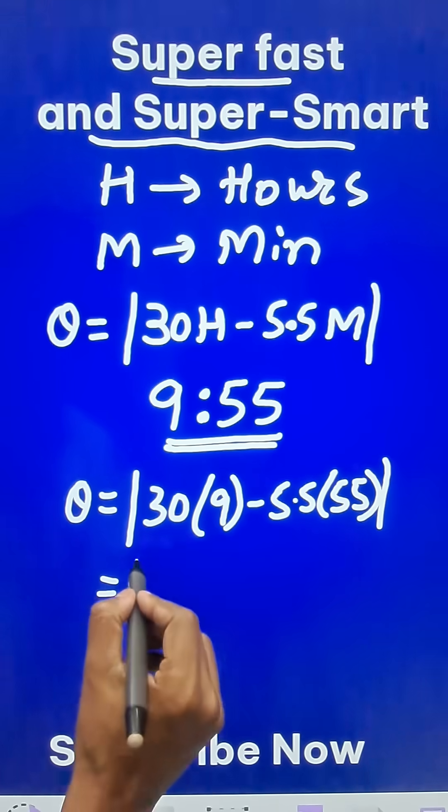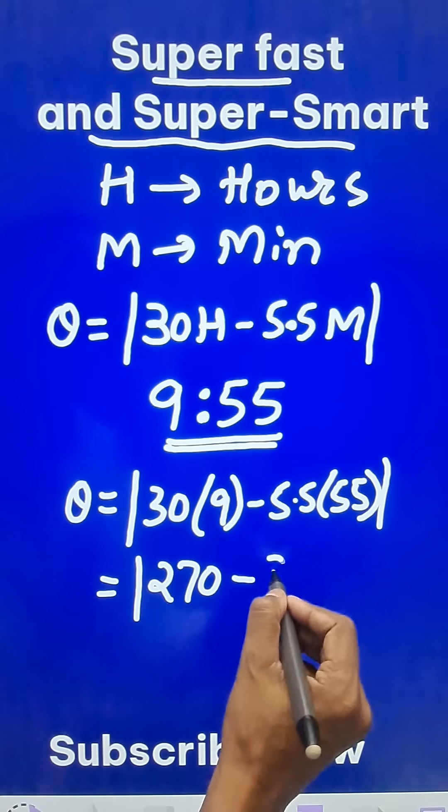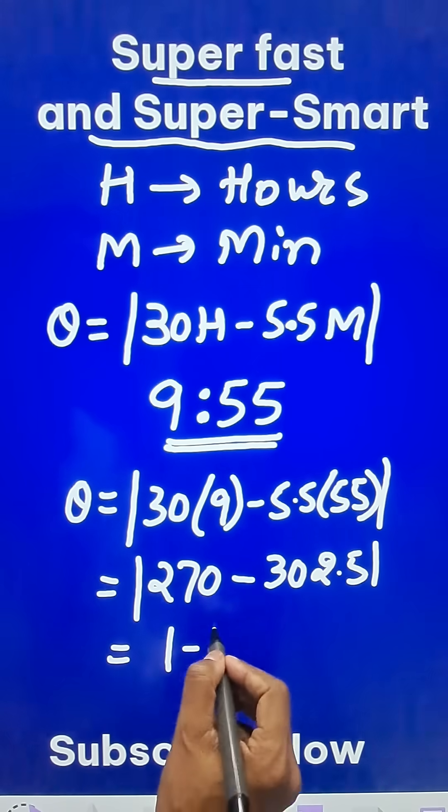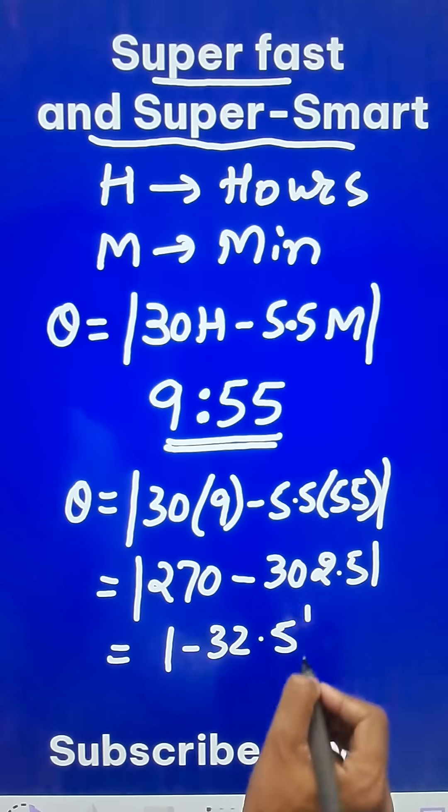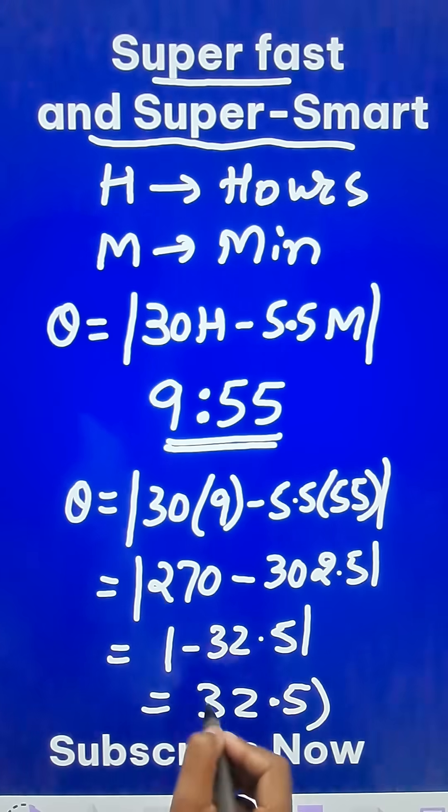Here it comes out to be 270 and this product will be 302.5. This comes out as negative 32.5, and if we remove the modulus the answer will be 32.5 degrees.